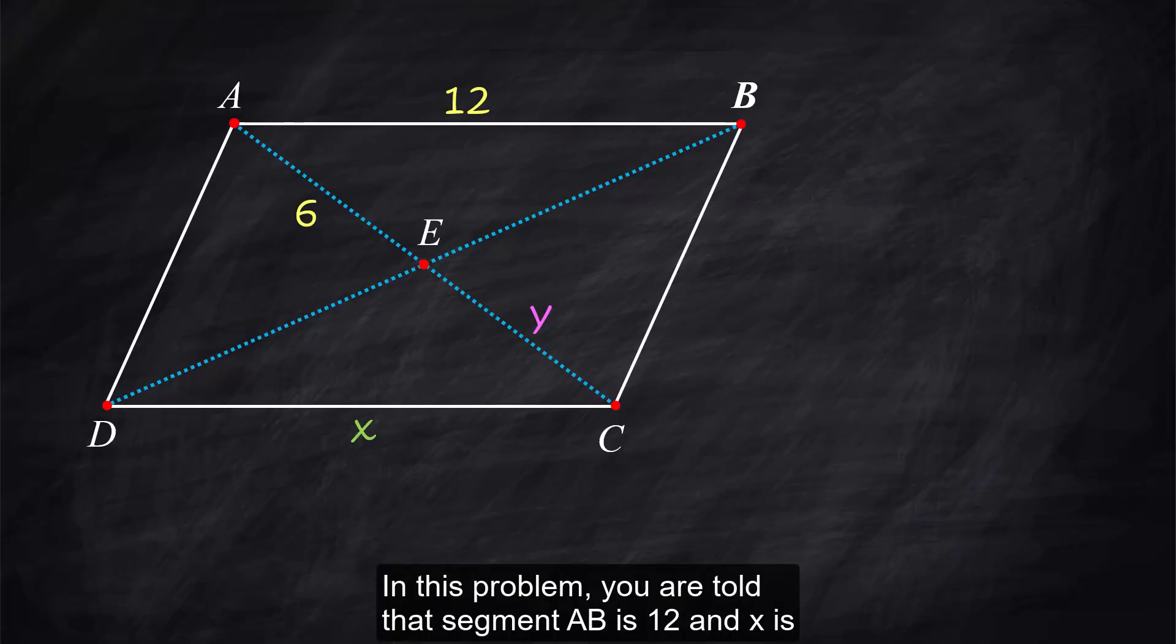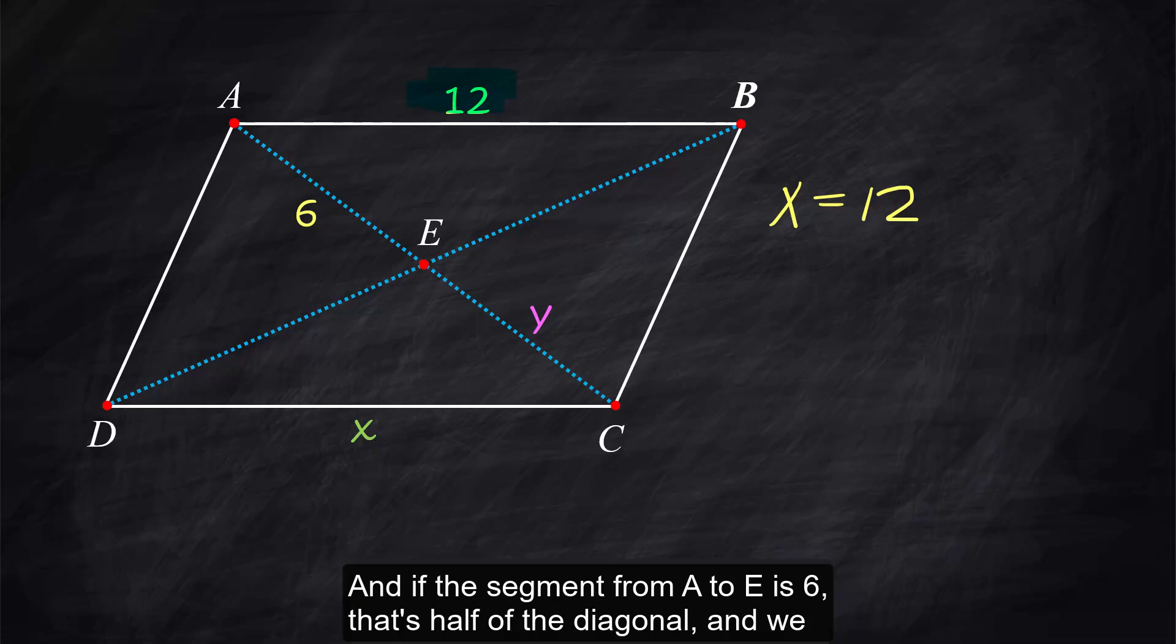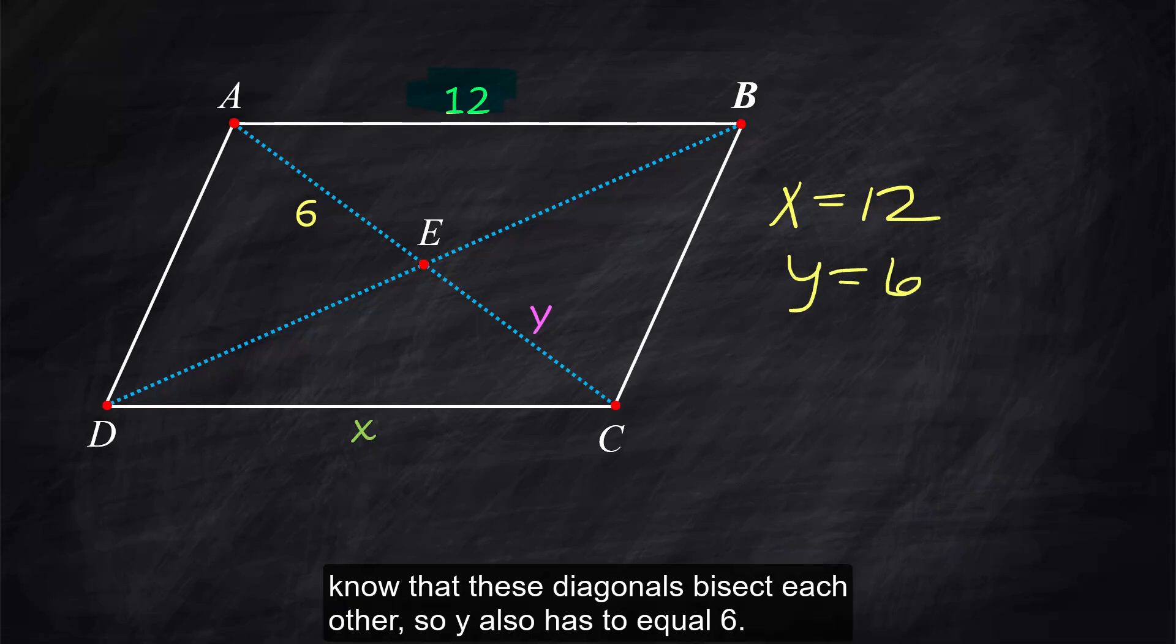In this problem you are told that segment AB is 12 and x is across the parallelogram from that one so it has to be 12 as well and if the segment from A to E is 6 that's half of the diagonal and we know that these diagonals bisect each other so y also has to equal 6.